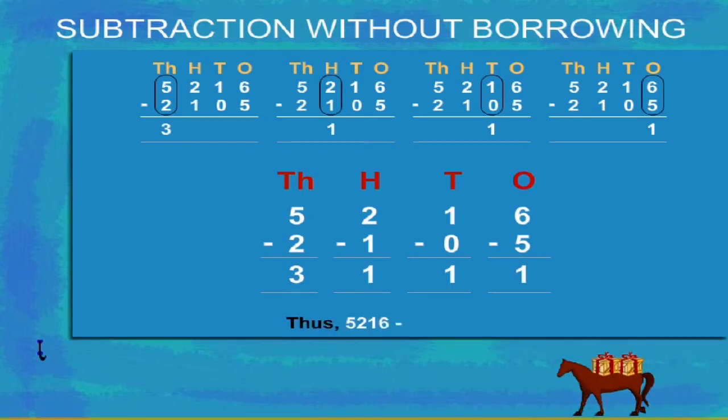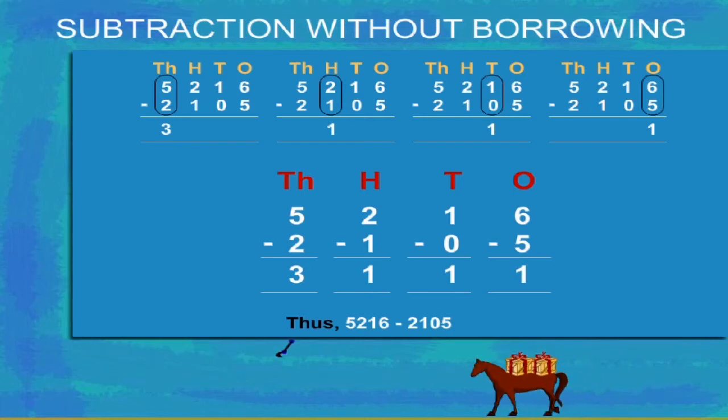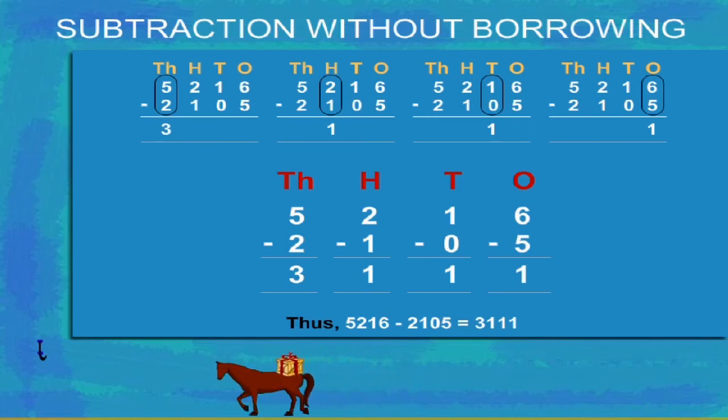Thus, 5216 minus 2105 is equal to 3111. Thank you.